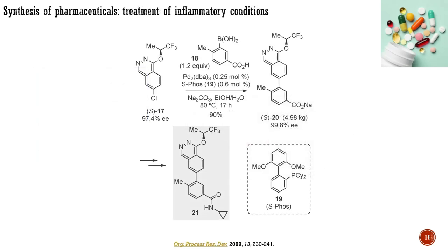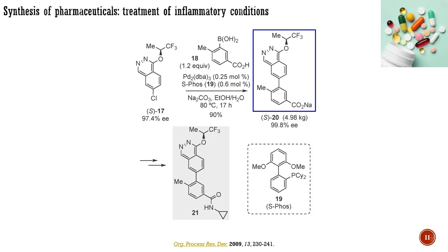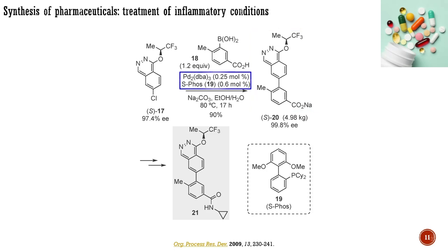Here is another example reported by Amgen on the multi-kilogram preparation of thalazine, which is used for the treatment of inflammatory conditions such as rheumatoid arthritis and psoriasis. The key step was based on the Suzuki coupling involving thalazine chloride and a boronic acid. They managed to obtain the product on a 5-kilogram scale with a 90% yield. The main side reaction was the protodeboronation of the boronic acid, as the reaction was performed in protic solvents; however, this side process could be minimized by the application of SPhos as a ligand. The key intermediate was purified by recrystallization and transformed into the final product through amidation. The high activity of the catalytic system based on SPhos enabled a very low catalyst loading for this multi-kilogram scale process.